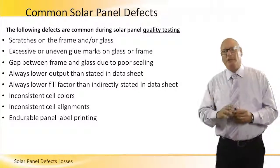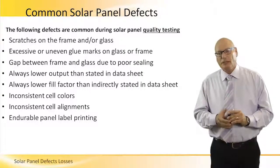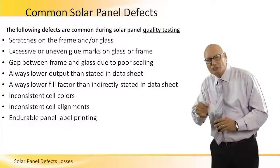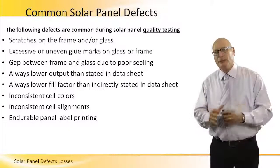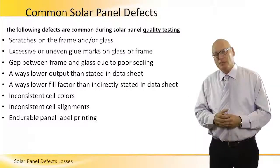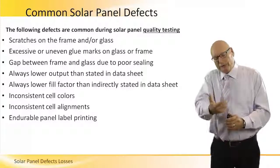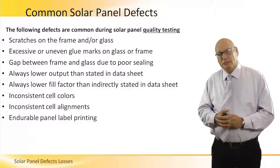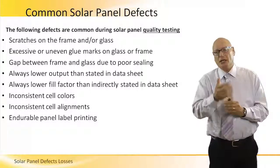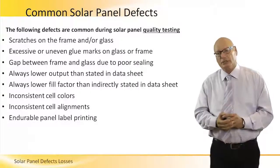Let's go now to panel-level defects. Scratches on the frame and on glass — when we have a scratch on the glass, this acts as a filter. The light beam that hits that scratch is being reflected to the sides or reflected back, meaning it will not enter through the glass and will not penetrate to the silicon layer.